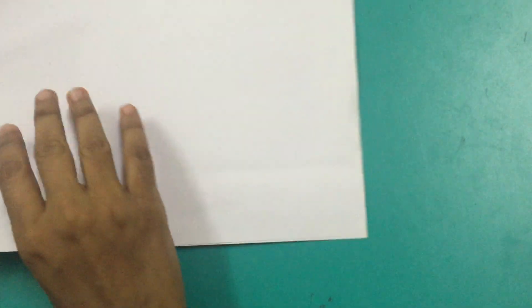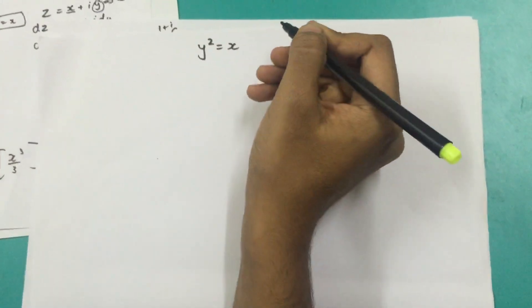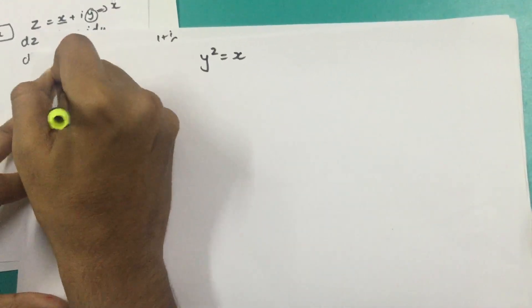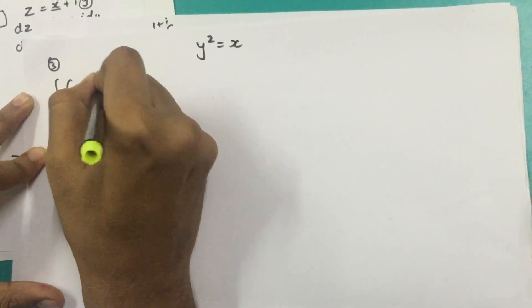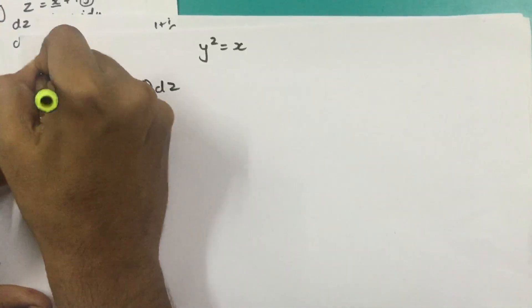Now let's get to the third part: along the parabola y² = x. The answers are different for each path, and that's the reason it is called complex integration. So my question is again: ∫(x - y + ix²) dz from 0 to 1+i.